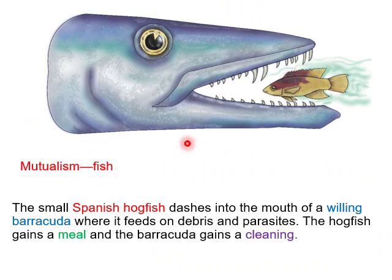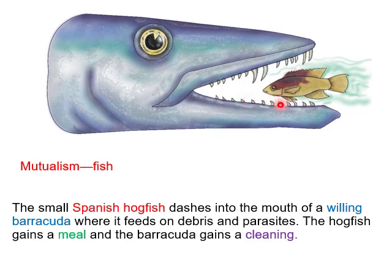The ants carry on their bodies the bacterium Streptomyces, which produces antibiotics to fight a fungal parasite. This is another example of mutualism. The small Spanish hawkfish dashes into the mouth of a willing barracuda, where it feeds on debris and parasites. The hawkfish gains a meal and the barracuda gains cleaning. We call this interaction mutualism.